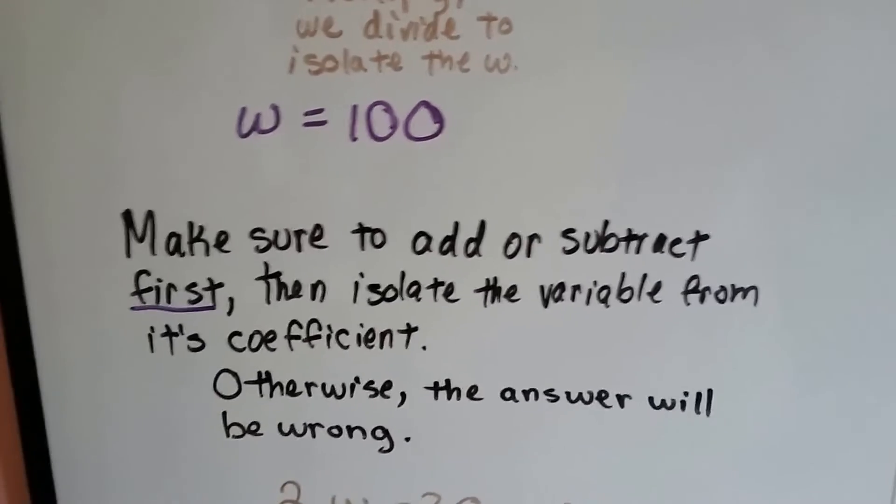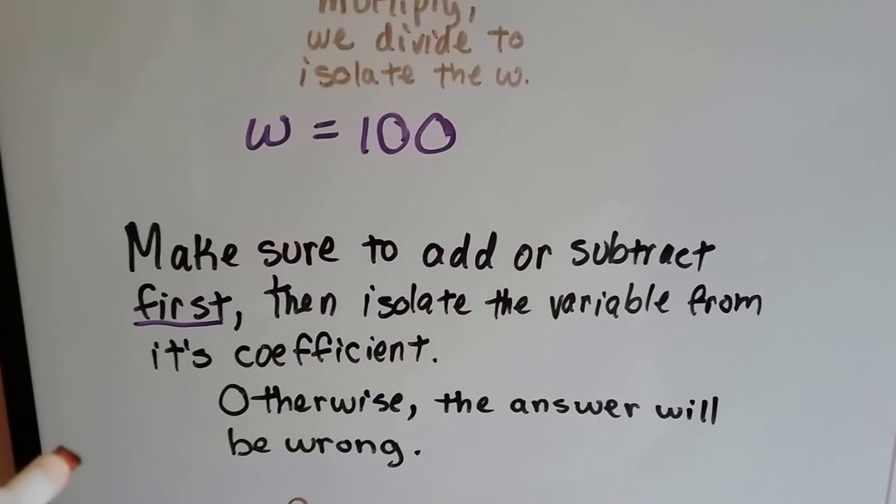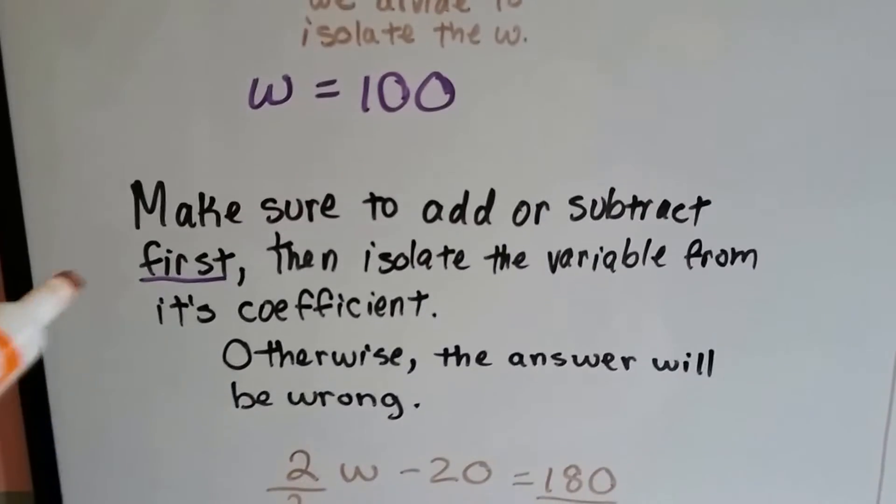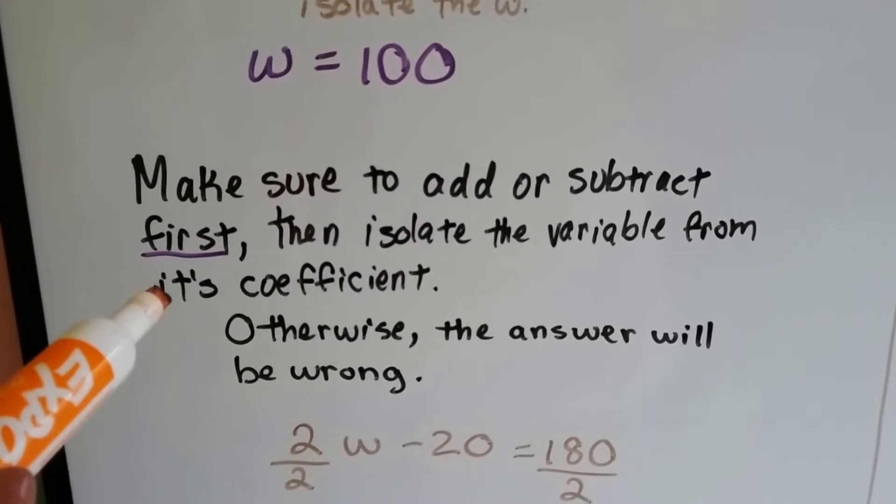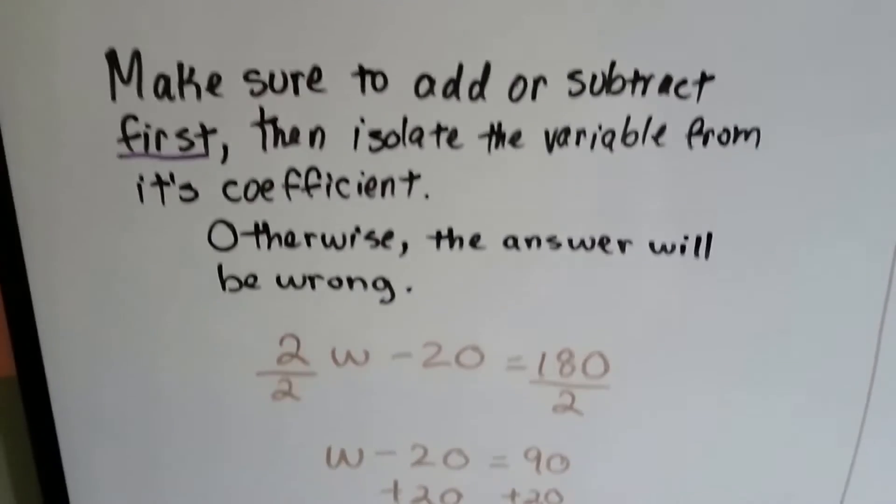Now we've got to make sure that we add or subtract first and then isolate the variable from its coefficient. If we don't add or subtract first, if we try dividing by this 2 first, the answer is going to be wrong.